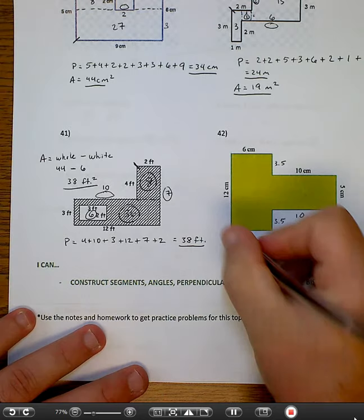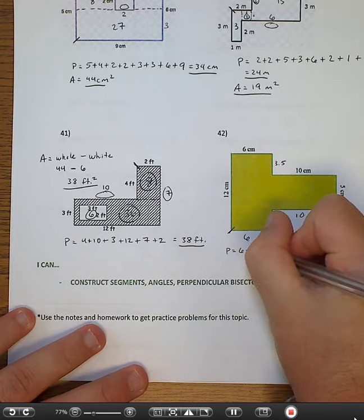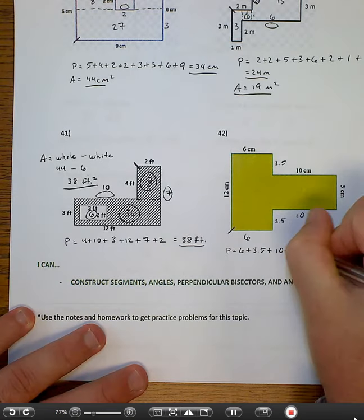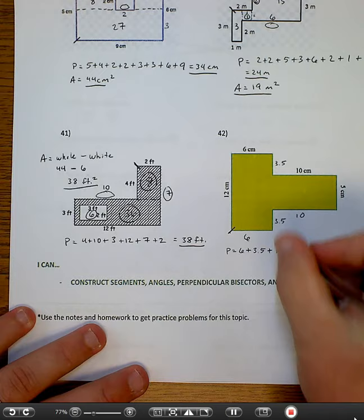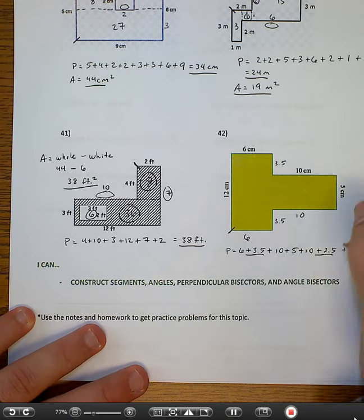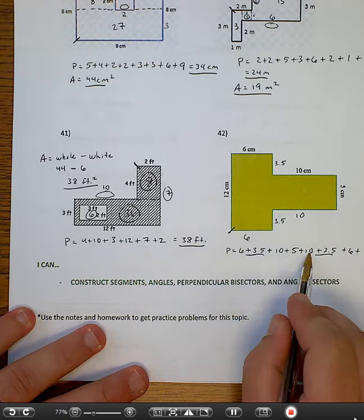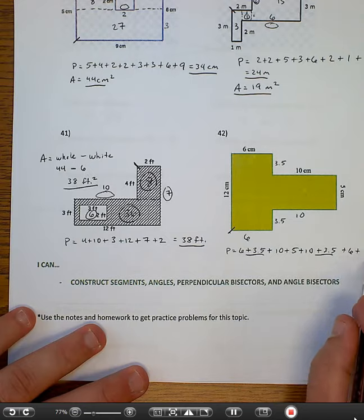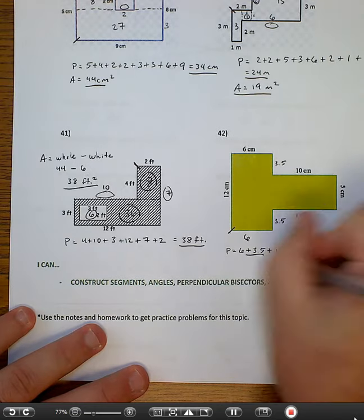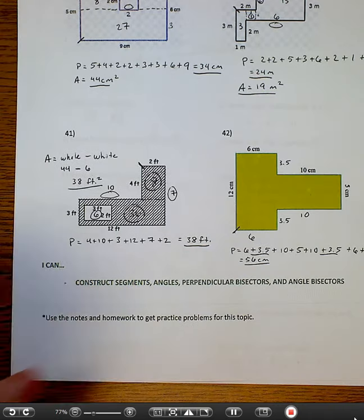So the perimeter, we'll start here. 6 plus 3.5 plus 10 plus 5 plus 10 plus 3.5 plus 6 plus 12. So 6, I know these two add up to 7. 7 plus 6 is 13. 23, 33, 38, 44, 56. 56 centimeters is the perimeter.